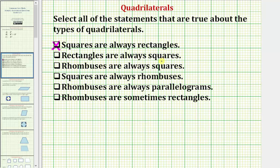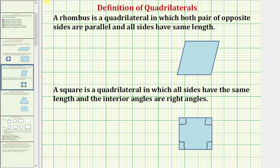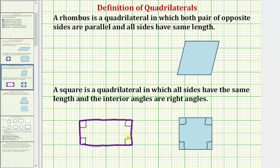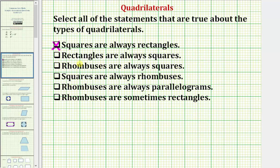Next: rectangles are always squares. Going back to the definition of a square, let's sketch a typical rectangle and see if it satisfies the definition. A square requires all sides to have the same length and interior angles to be right angles. While the interior angles are right angles, all four sides do not have the same length, which means rectangles are not always squares. So we do not check the second statement.